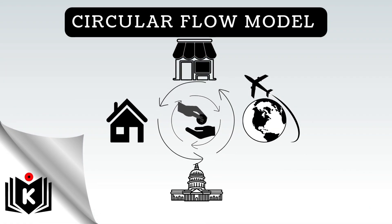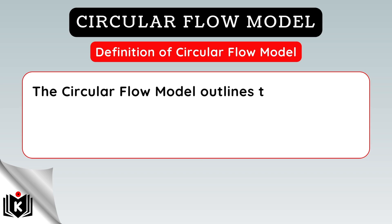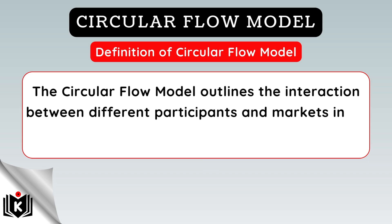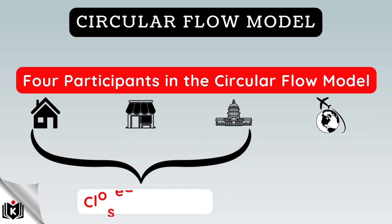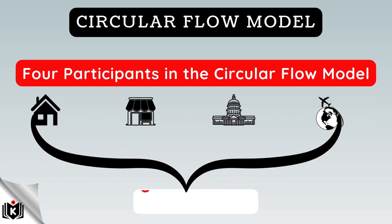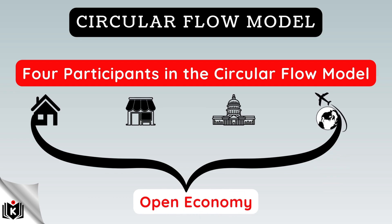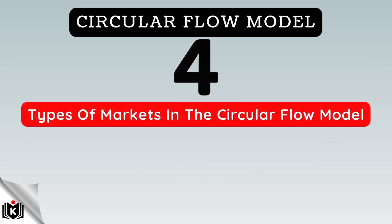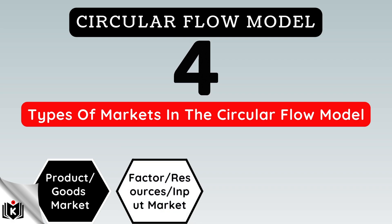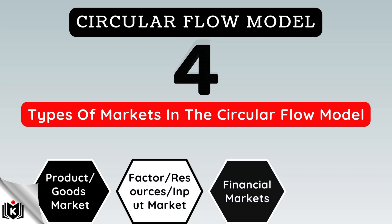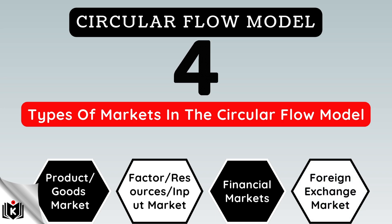Just to recap and in summary: the circular flow model outlines the interaction between different participants and markets in an economy. There are four participants — households, businesses, and the government making up a closed economy, with the foreign sector added to make up the four-sector open economy. Key markets within the circular flow include the product or goods market, the factor/resources or input market, the financial markets, and the foreign exchange market.